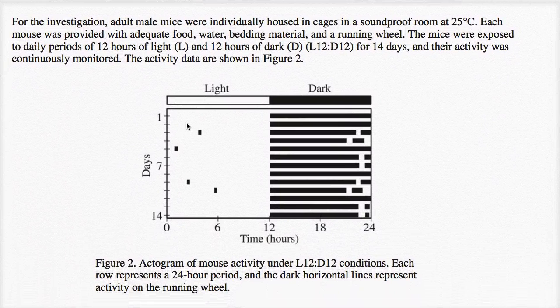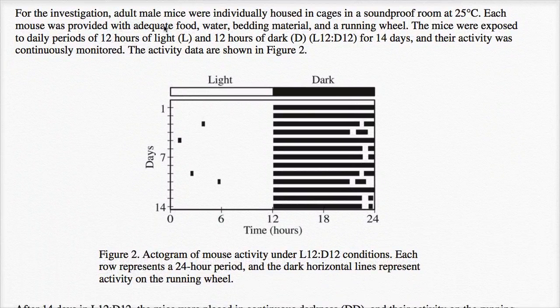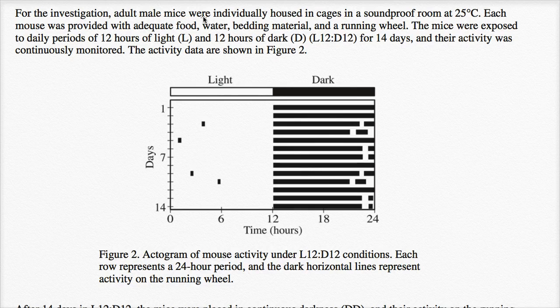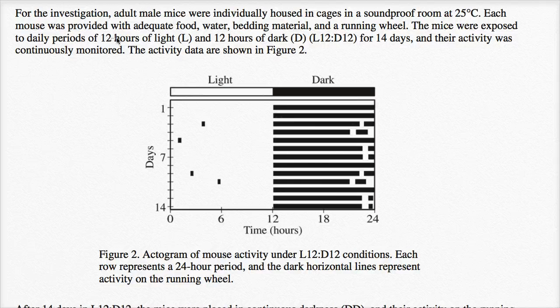For the investigation, adult male mice were individually housed in cages in a soundproof room at 25 degrees Celsius. So they wanted to make sure that these mice didn't bother each other, that this was definitely controlled conditions, soundproof that they're not impacted by outside noises, other mice, or variation in temperature. So they tried to control for all of these things. Each mouse was provided with adequate food, water, bedding material, and a running wheel.